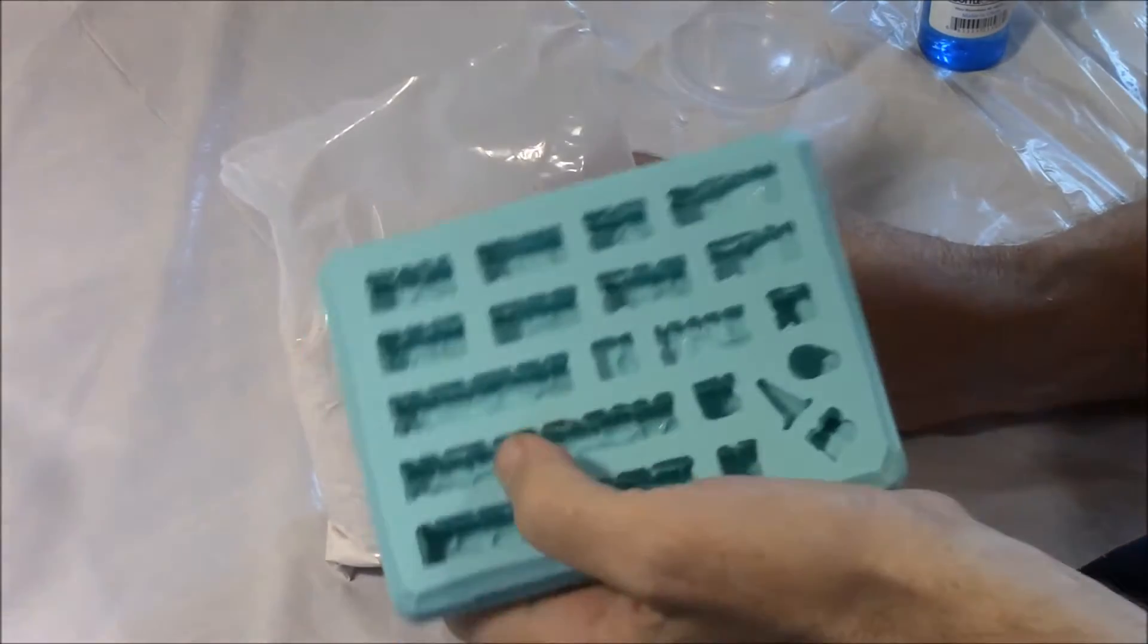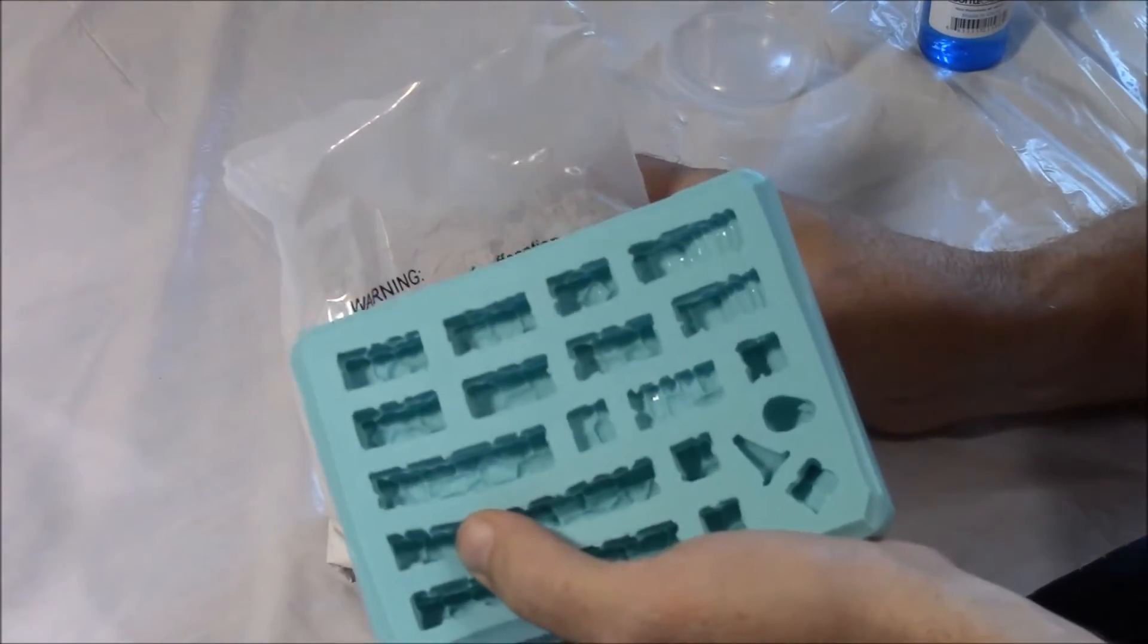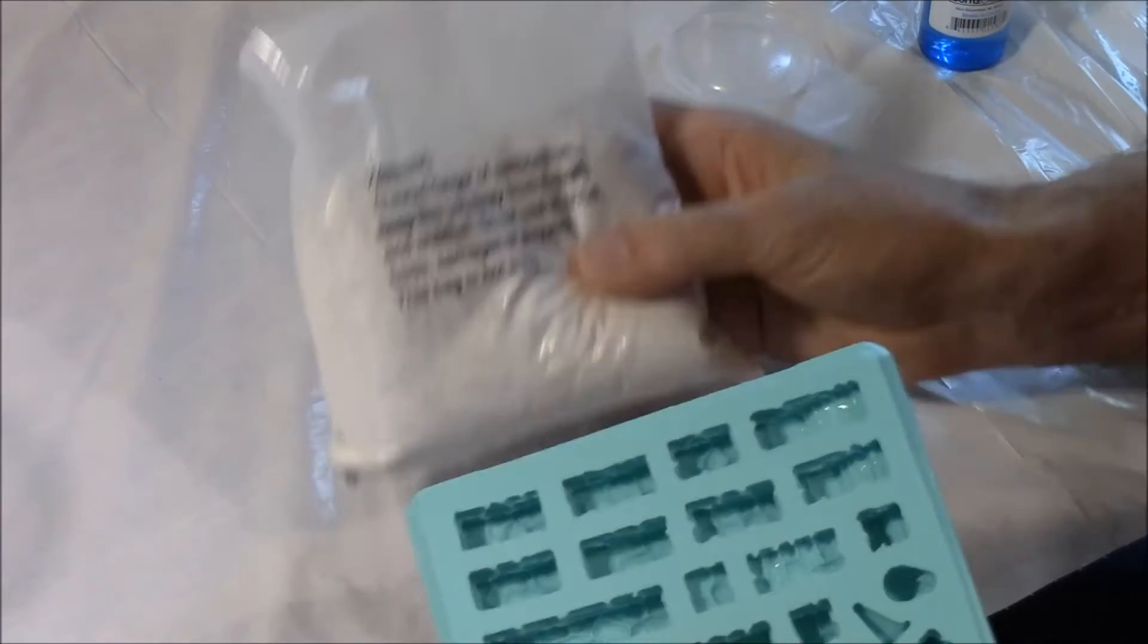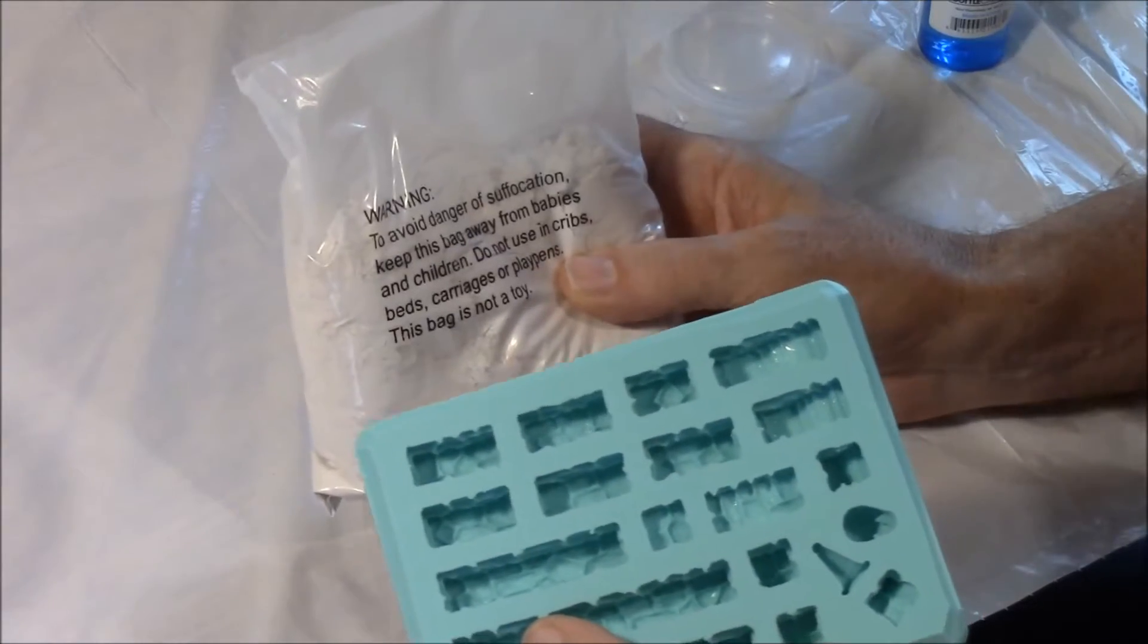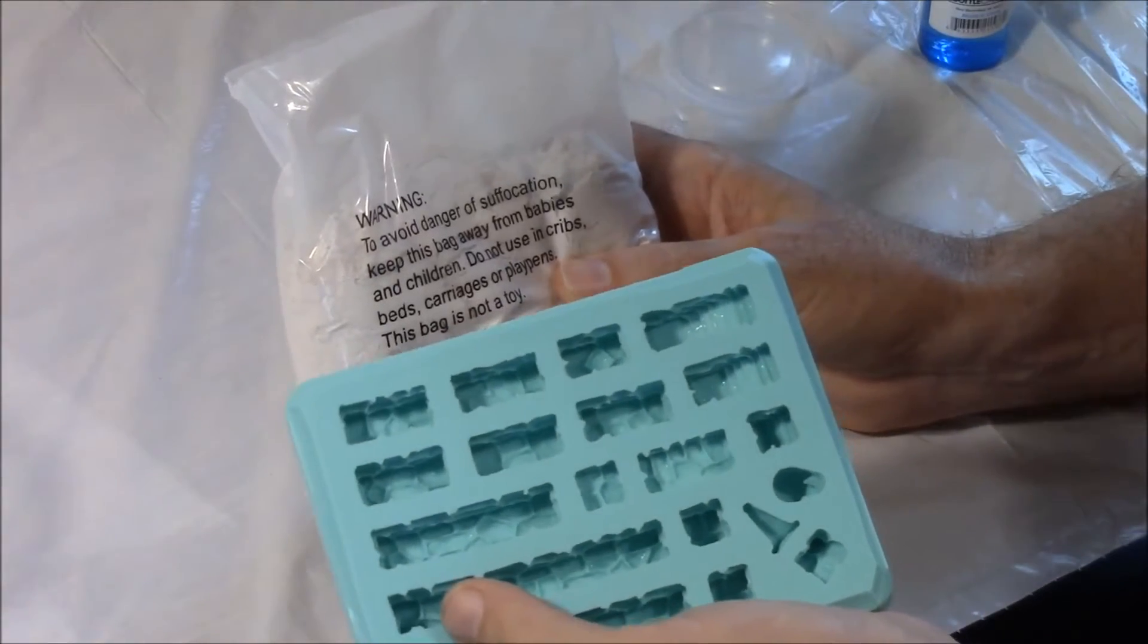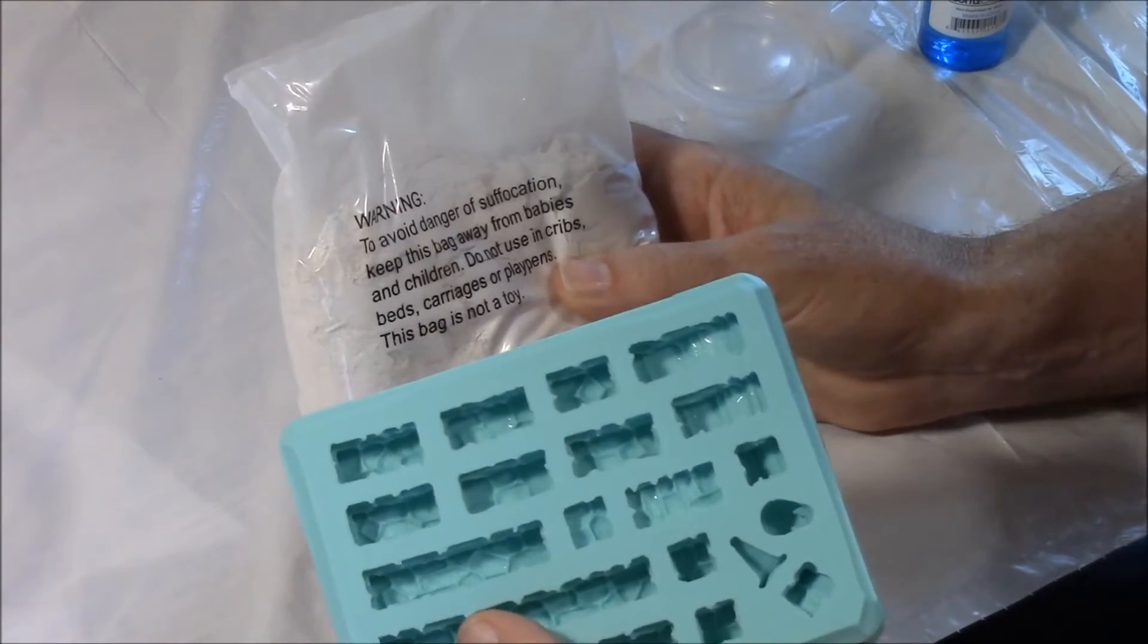Using Plaster of Paris, for an average size mold, we're going to use about 2 ounces of water. Now this amount is going to be different if you're using dental stone. Dental stone actually uses a little bit less water and more powder for the same amount.